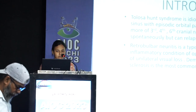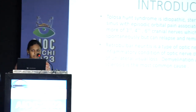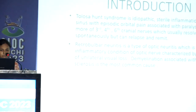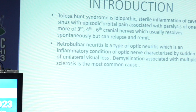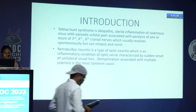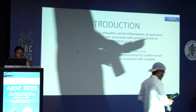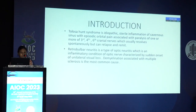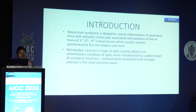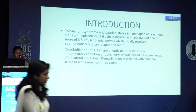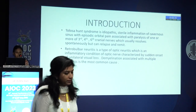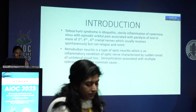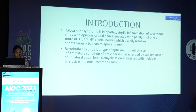Tolosa-Hunt Syndrome presents with episodic orbital pain associated with paralysis of one or more of the third, fourth, and sixth cranial nerves, which usually resolves spontaneously but can relapse and remit. Retrobulbar neuritis is a type of optic neuritis — an inflammatory condition of the optic nerve characterized by sudden onset of unilateral visual loss. Demyelination associated with multiple sclerosis is the most common cause.